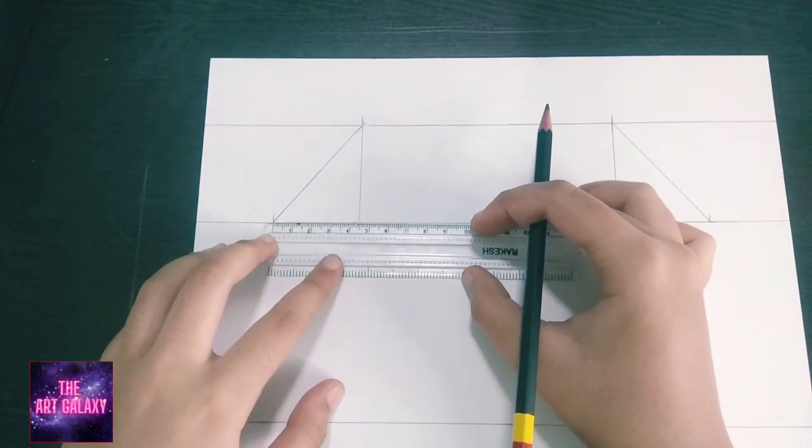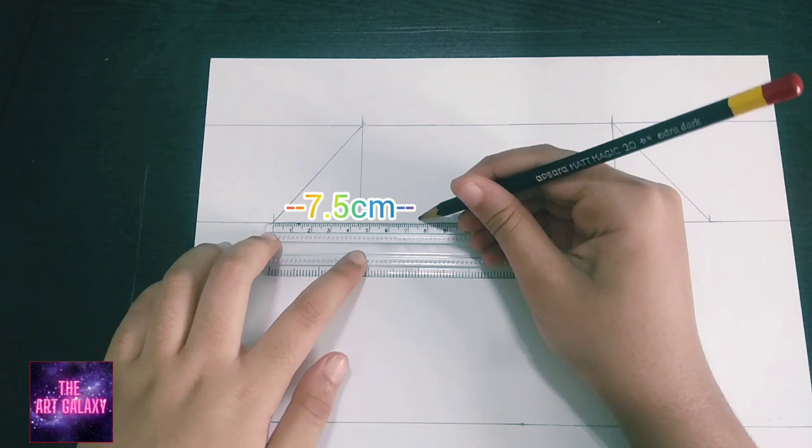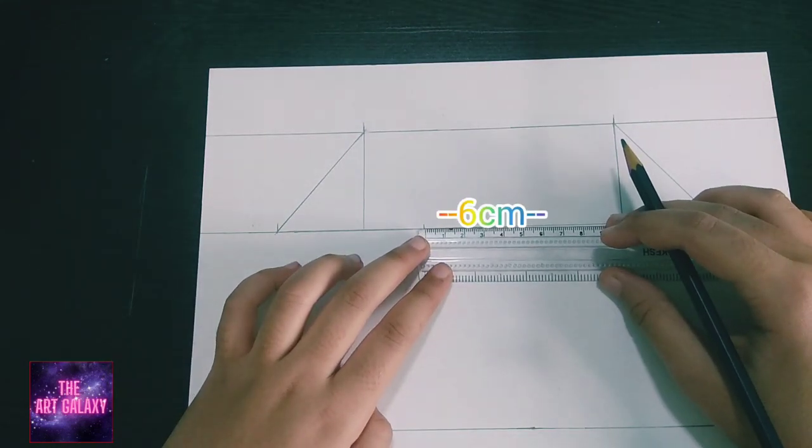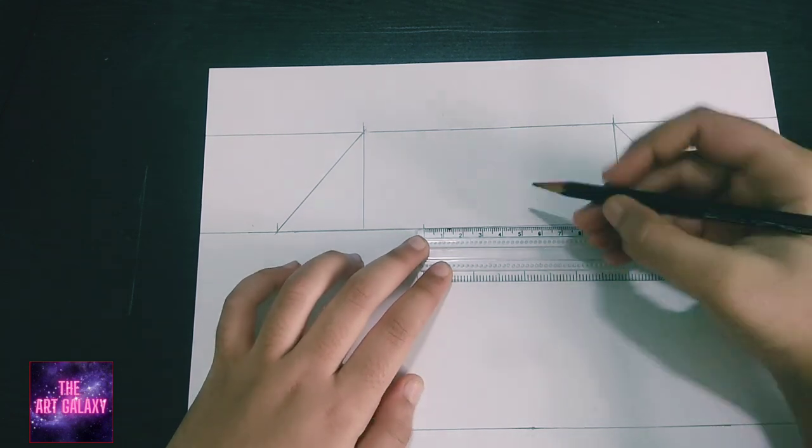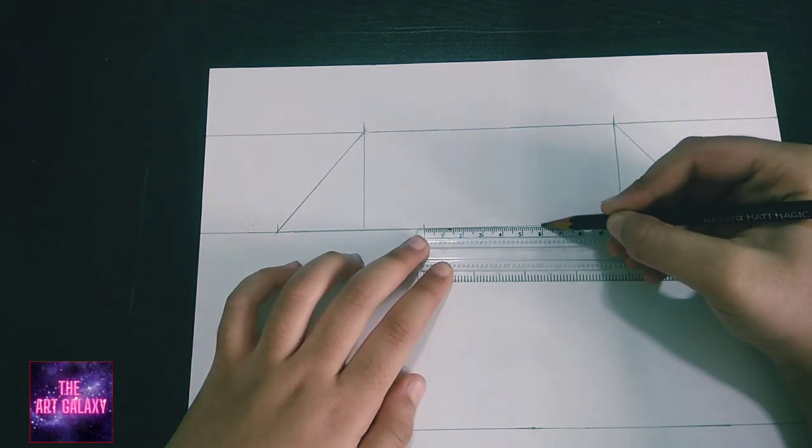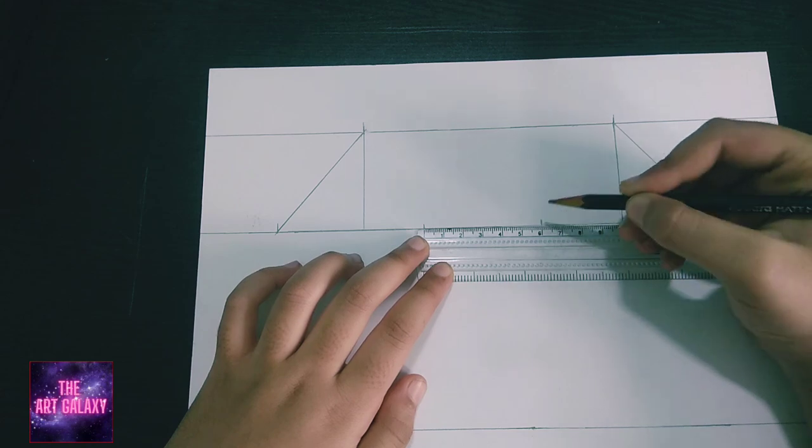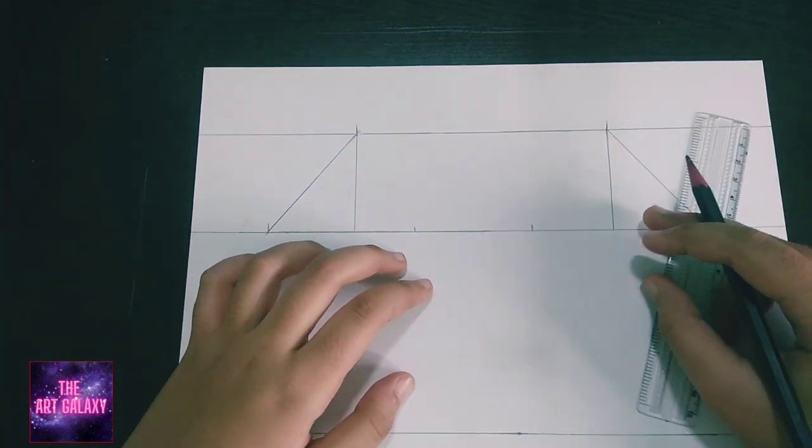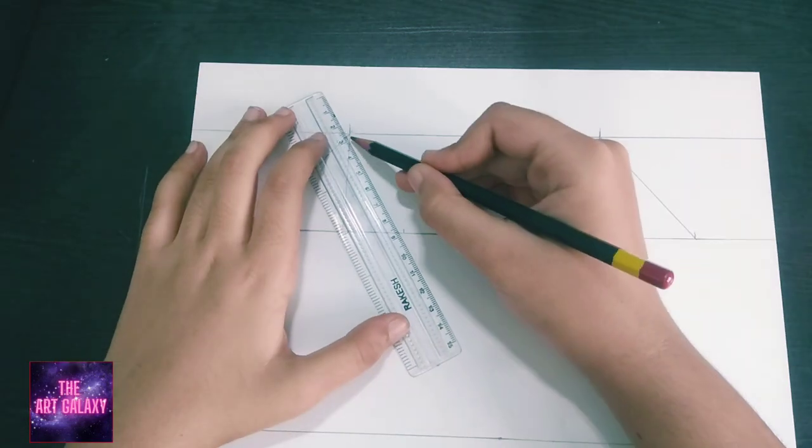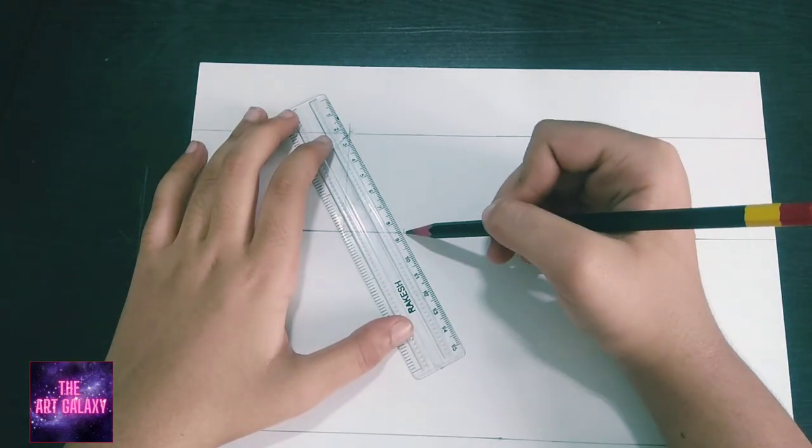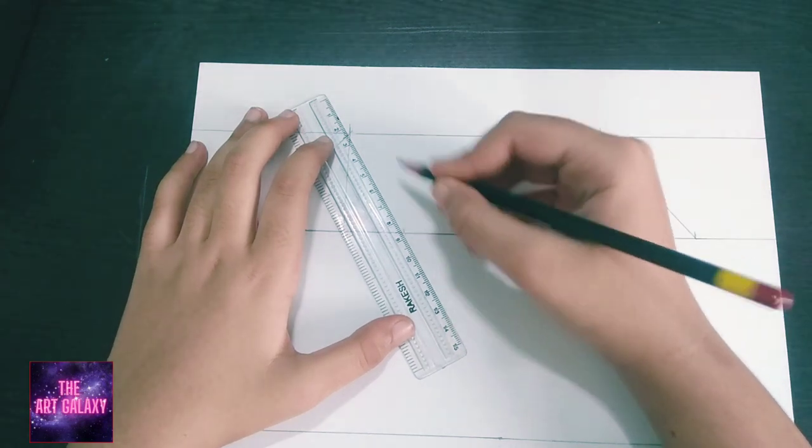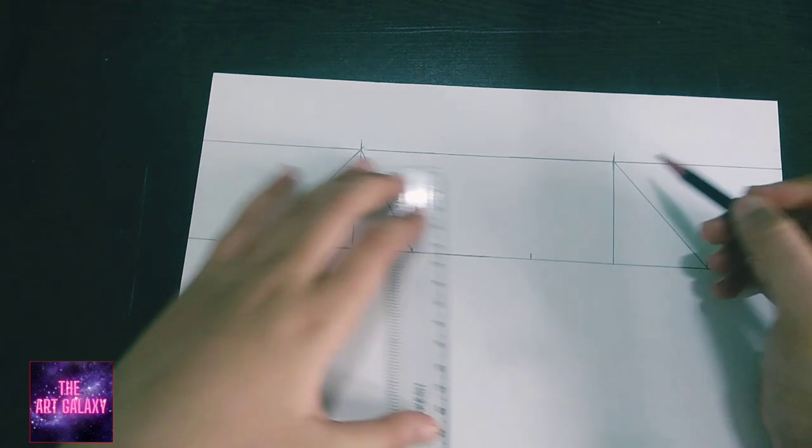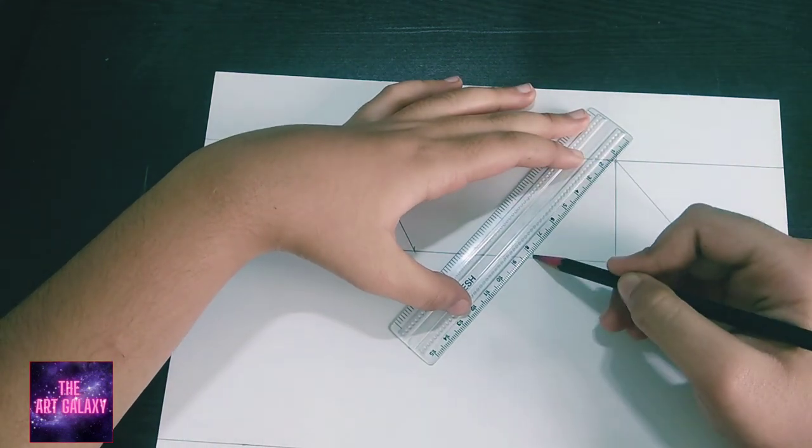Now we have to draw a mark of 7.5 cm from this point and again draw a mark of 6 cm. Now we have to join these two points. The same is done on the other side as well.